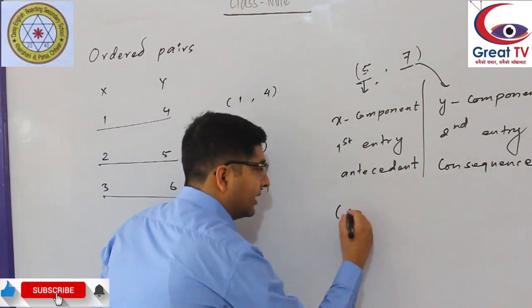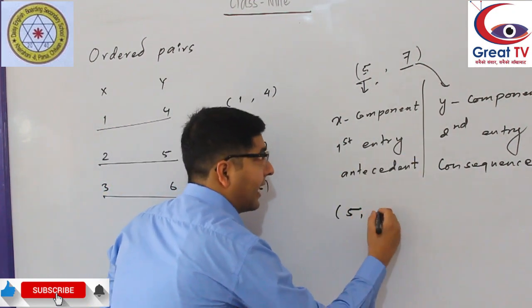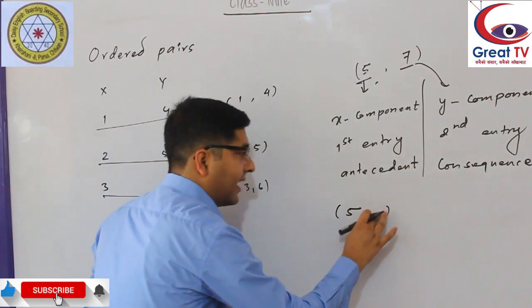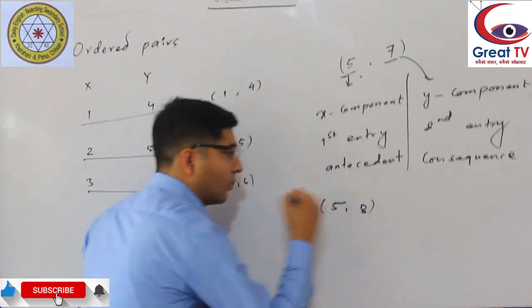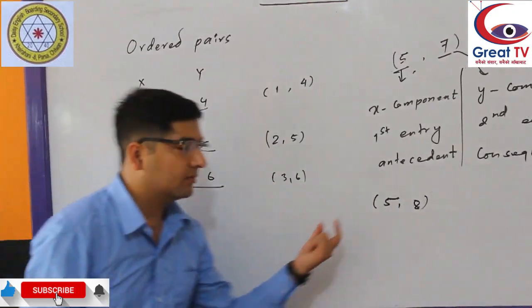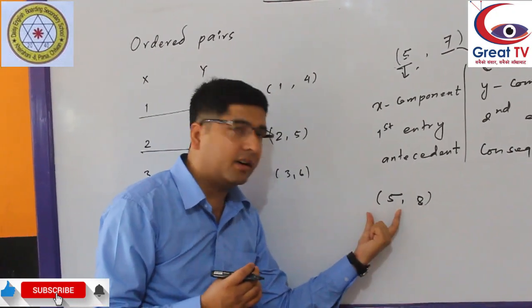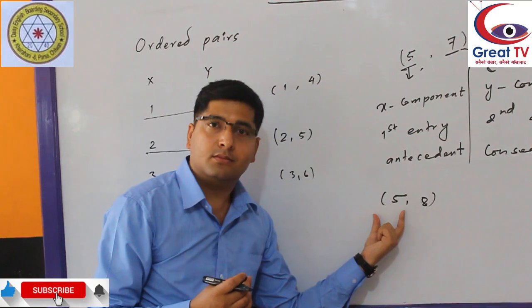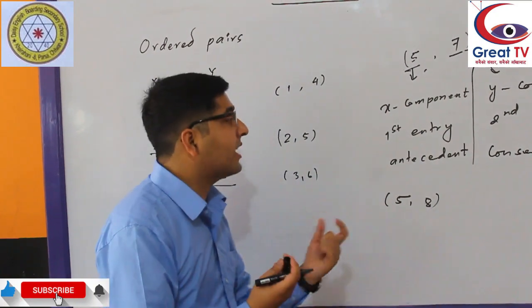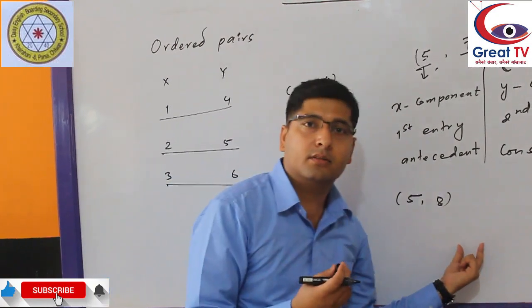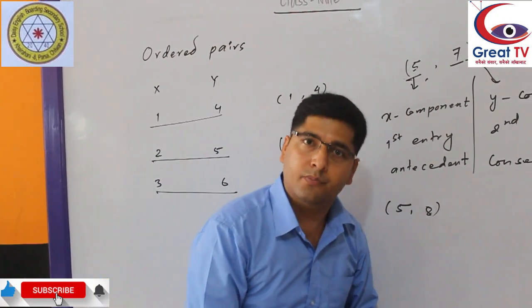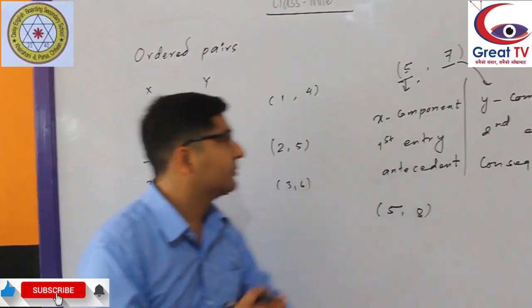Now, for the ordered pair (5, 8), what is the x-component? Definitely 5. Then what is the y-component of this ordered pair? That is 8.